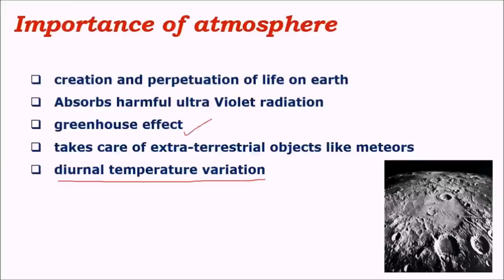This is mainly due to the greenhouse effect — that is, due to heat-trapping gases like carbon dioxide, methane, etc. There are also other phenomena like ocean currents and wind systems which help in maintaining the heat balance on earth's surface as well as during day and night times. So atmosphere is very important for both the existence as well as the continuation of life on earth.